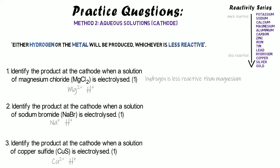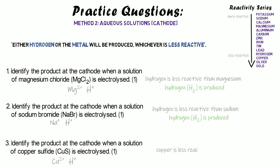In the first example, out of magnesium and hydrogen, hydrogen is less reactive — so hydrogen will be produced at the cathode. In the second example, out of sodium and hydrogen, hydrogen is again less reactive — so hydrogen is produced again. In the third example, out of copper and hydrogen, copper is actually less reactive — it's lower down the reactivity series than hydrogen — so copper will be produced.